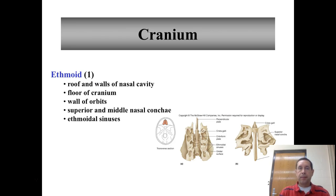Finally we have the ethmoid bone, which makes up the roof and walls of the nasal cavity, the floor of the cranium, and the walls of the orbit. It forms two ridges that project into the nasal cavity — the superior and middle nasal conchae — and it contains the ethmoidal sinuses.